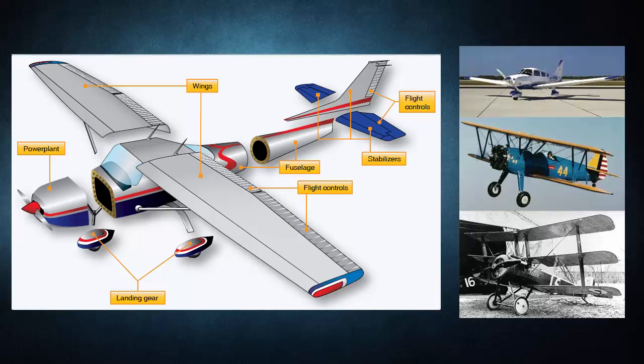Structural members of an aircraft's fuselage include stringers, longerons, ribs, bulkheads, and more. The main structural member in a wing is called the wing spar. The skin of aircraft can also be made from a variety of materials, ranging from impregnated fabric to plywood, aluminum, or composites. Under the skin and attached to the structural fuselage are the many components that support airframe function. The entire airframe and its components are joined by rivets, bolts, screws, and other fasteners; welding, adhesives, and special bonding techniques are also used.